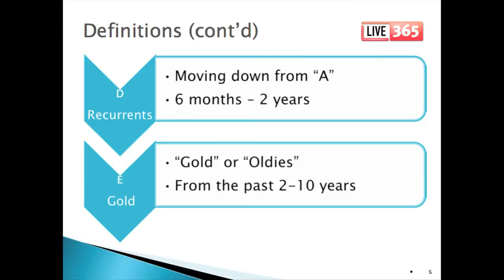Gold categories can be separated by strength — for example, primary hits and secondary hits — or possibly by era: hits from the 2000s, hits from the 1990s, hits from the 1980s. Of course, oldies and classic rock stations, the gold-based formats, will have multiple gold categories — all gold categories. For example, they might divide their categories based on decades such as the 60s, 70s, and 80s, as well as separating by primary and secondary.